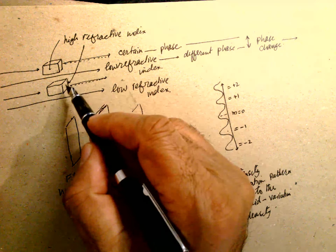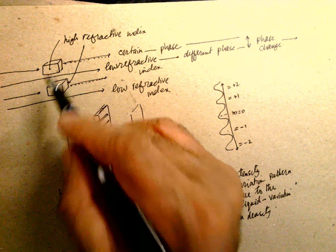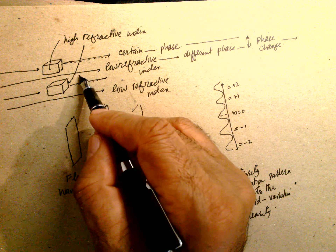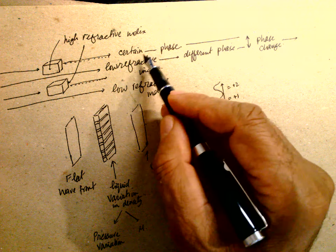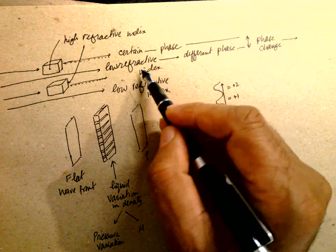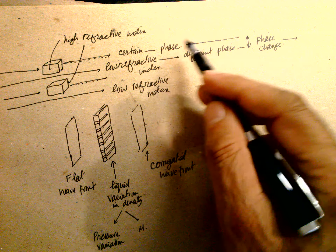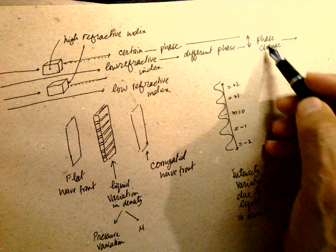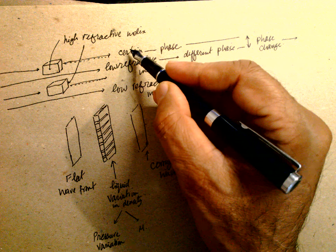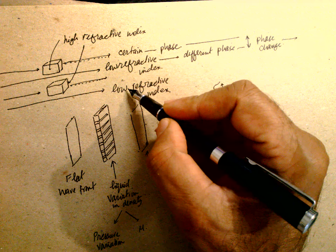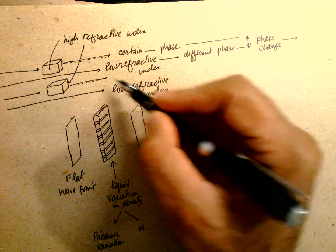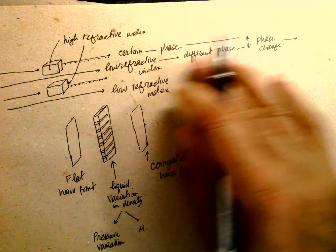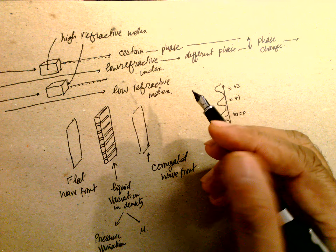The medium alternates between high refractive index and low refractive index regions — high, low, high, low — creating a periodic phase change. Because of this periodic phase change in the refractive index, the wavefront is modified.